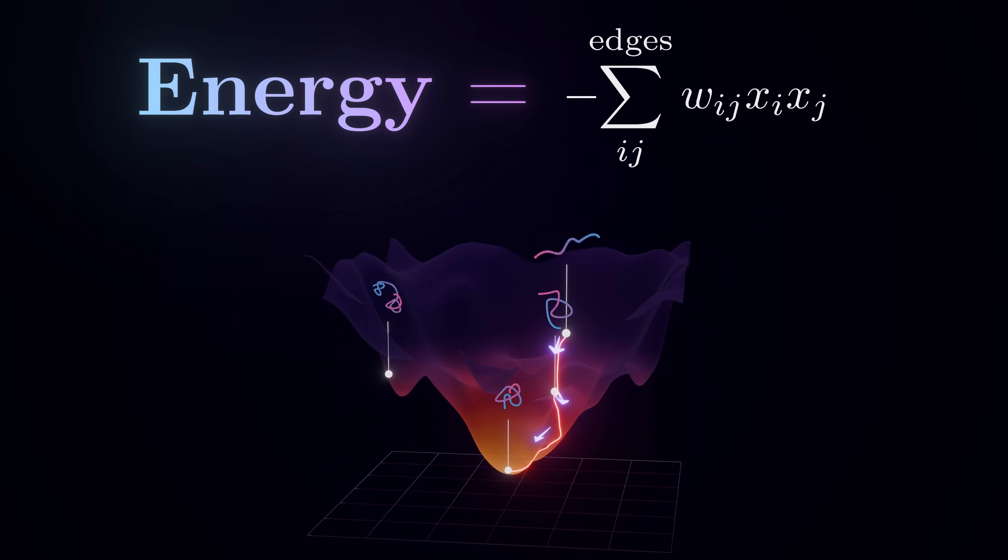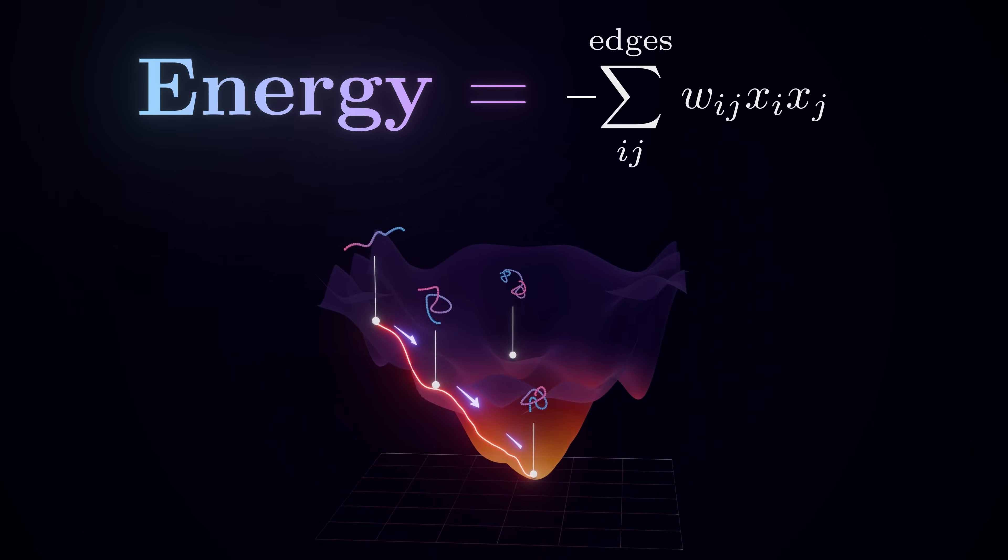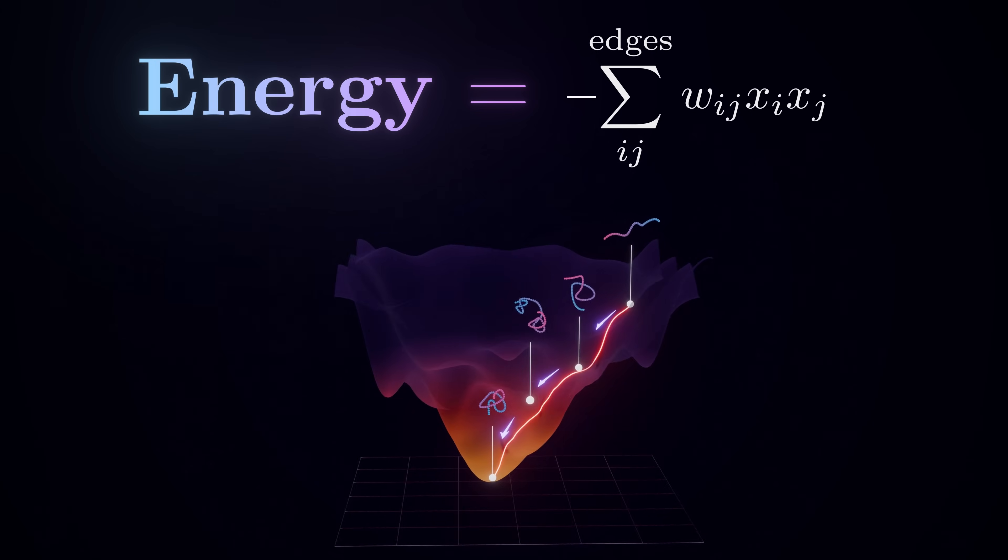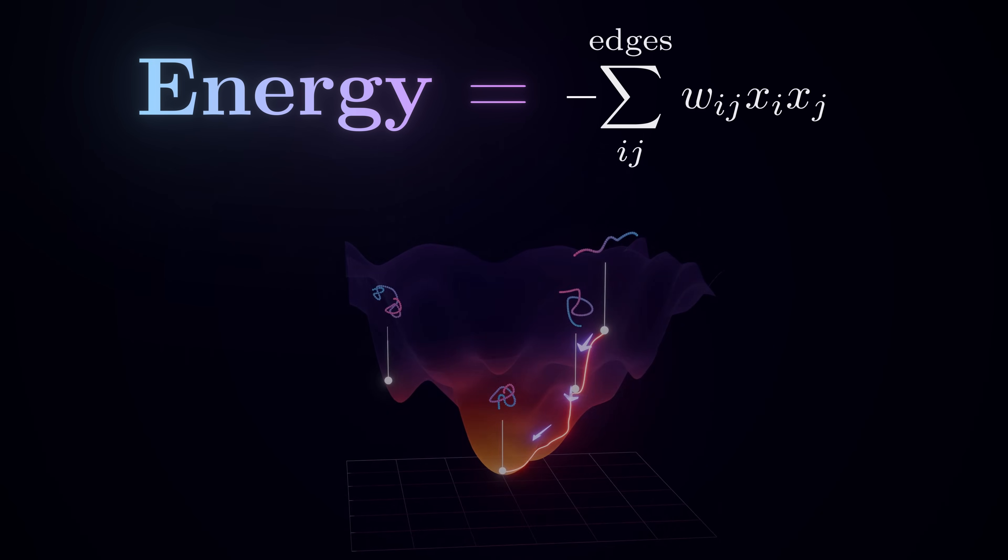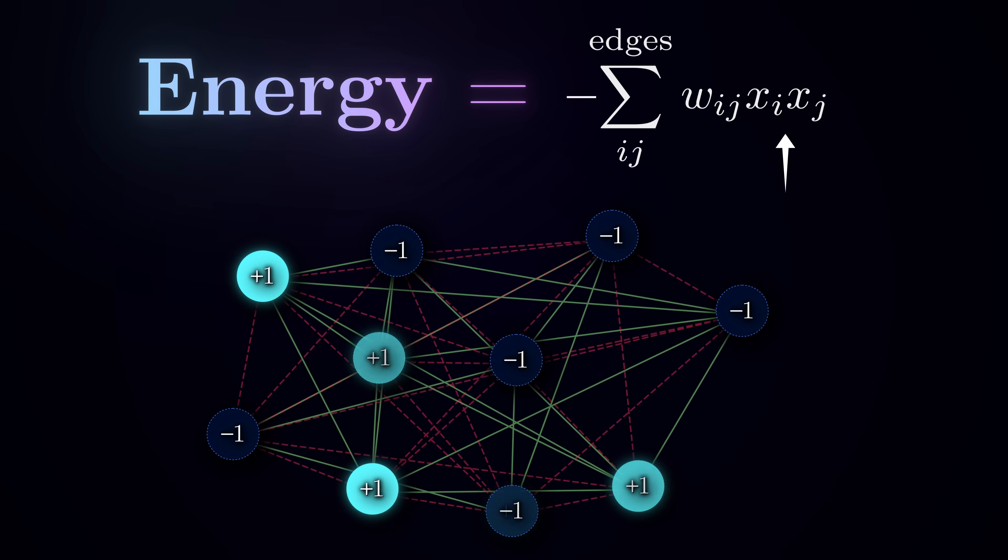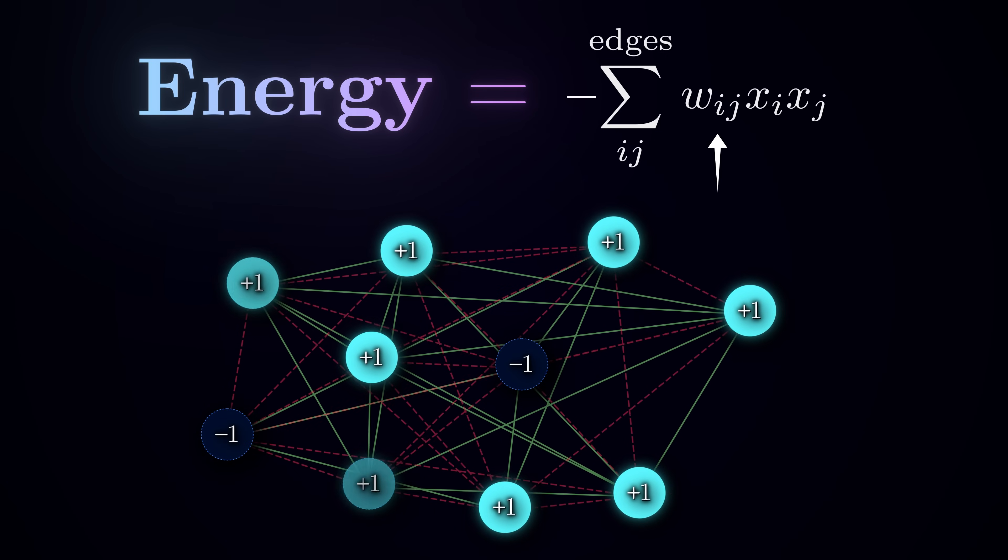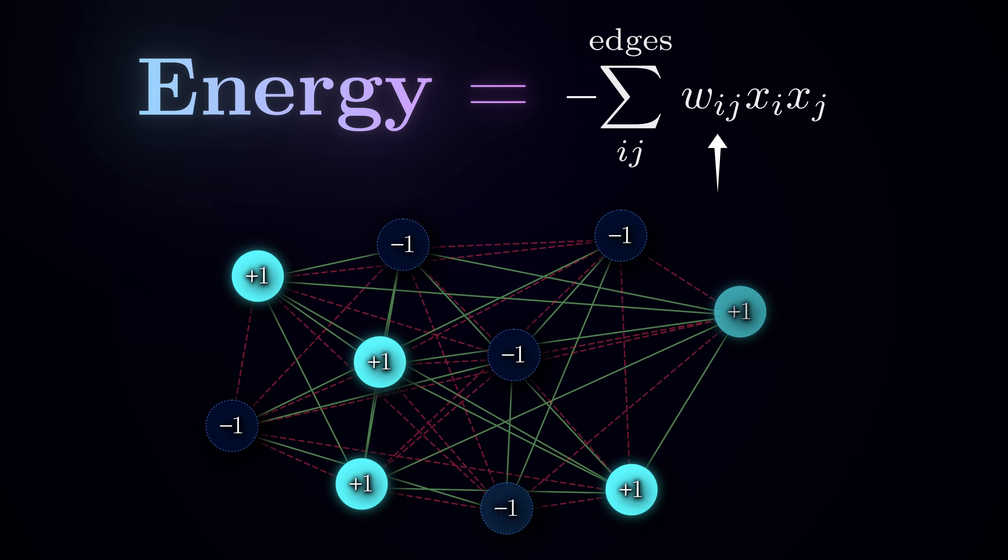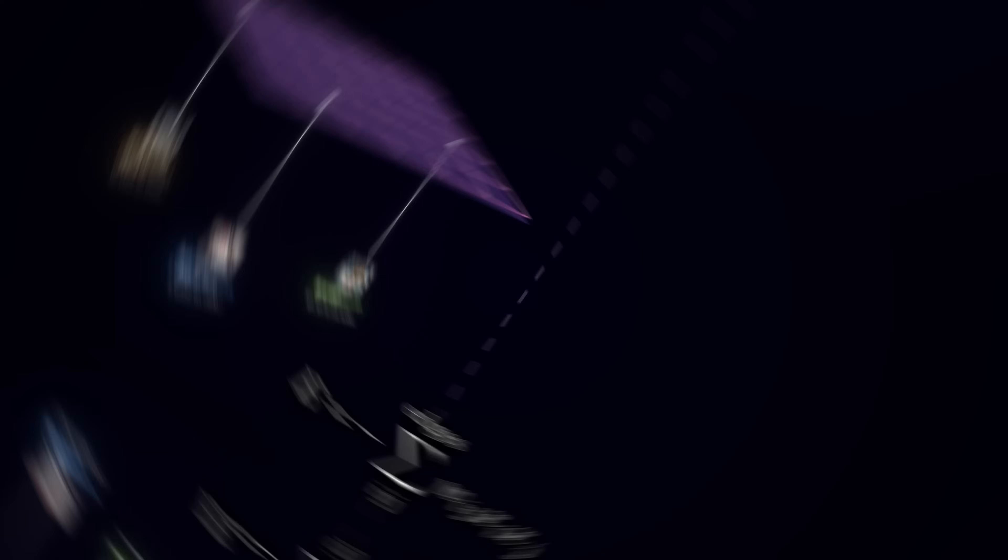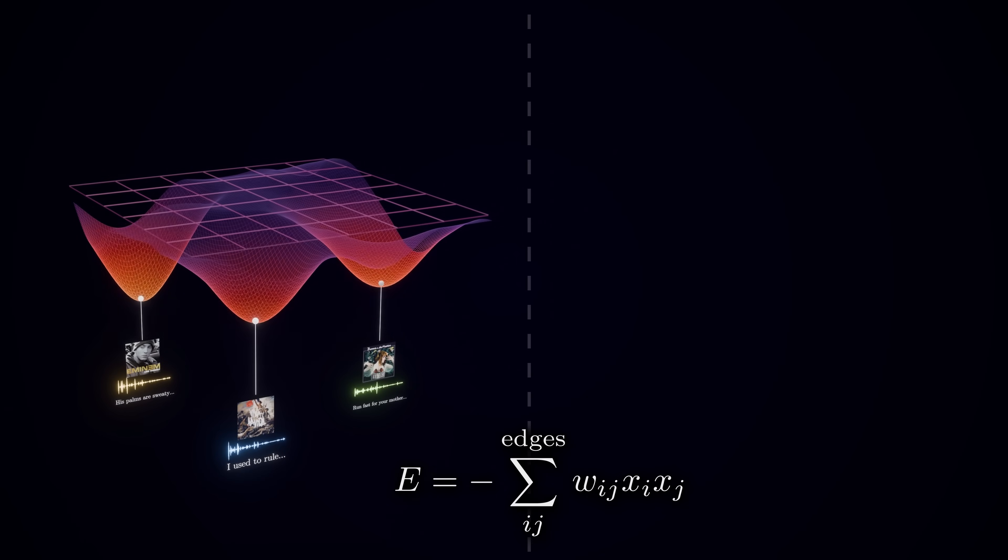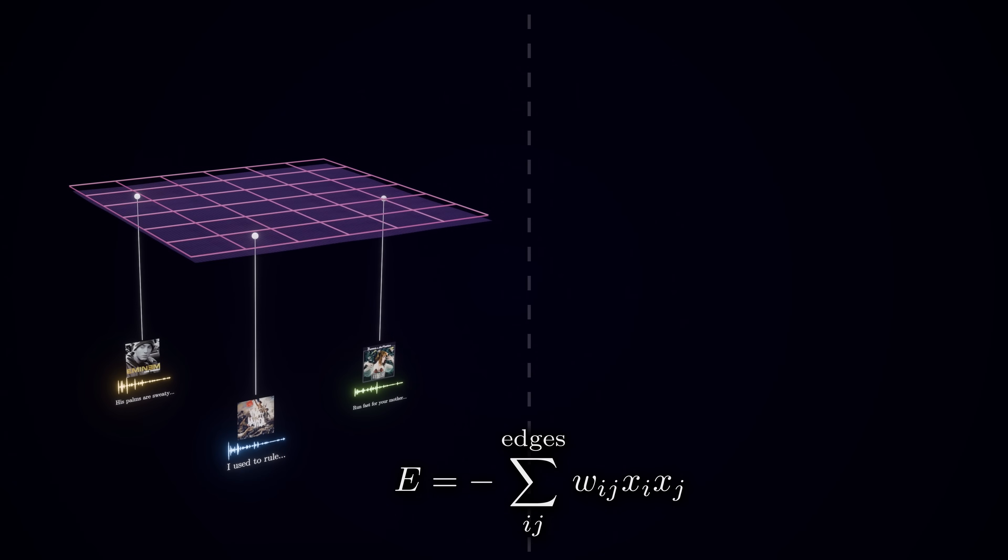As we discussed previously, we want the Hopfield network to be able to gradually evolve towards energy minima. But looking closely at the formula, we can see that the energy value depends both on the states and the weights, so there are a lot of things the system can tweak to change it. What exactly is getting adjusted?